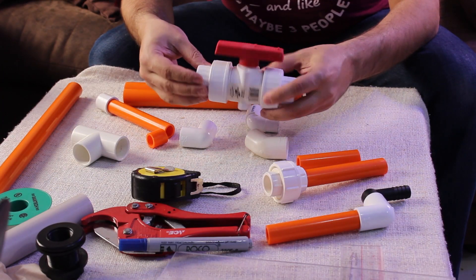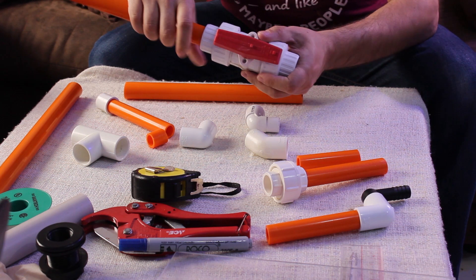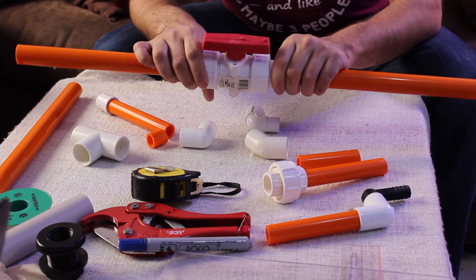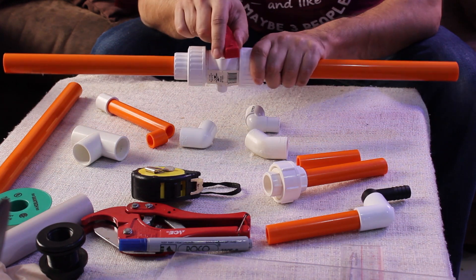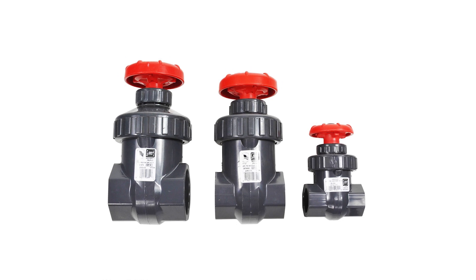The ball valve is used to turn off and turn on the flow. It's better to use a true union ball valve because the unions can be removed for cleaning or maintenance. For tuning the flow, we can use a gate valve.